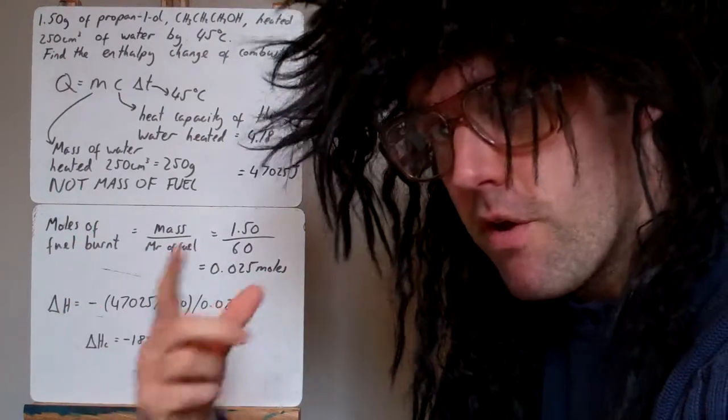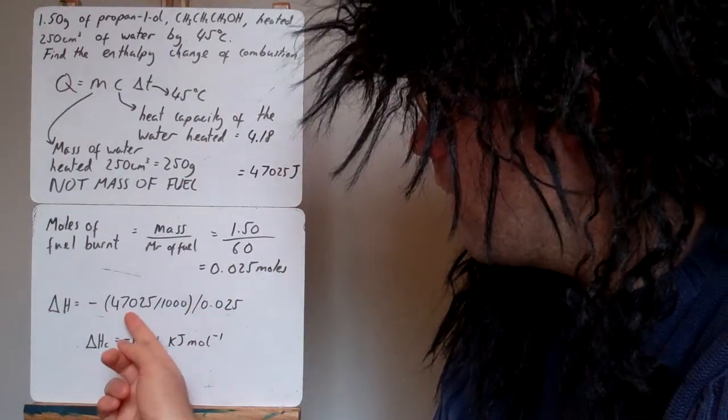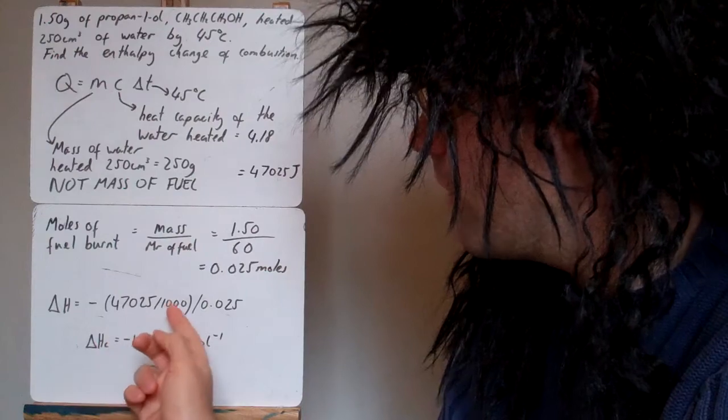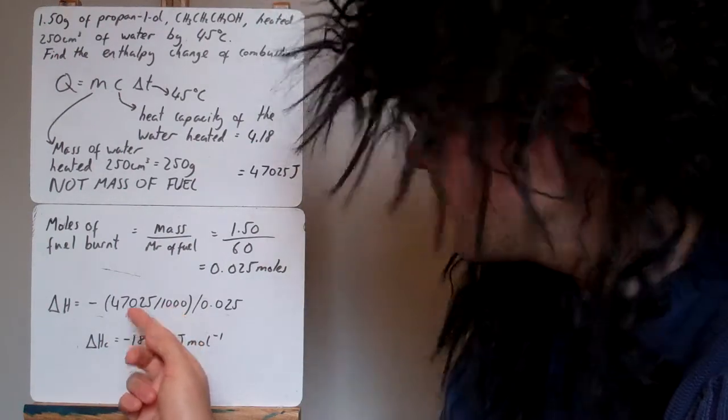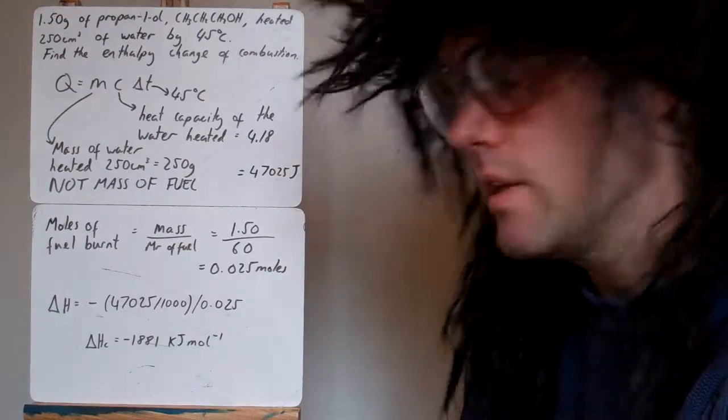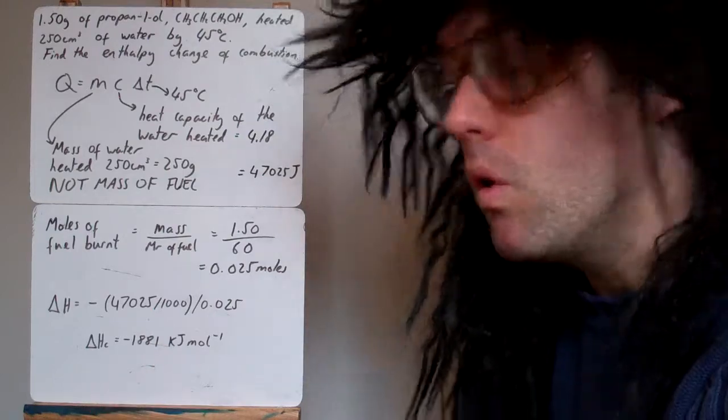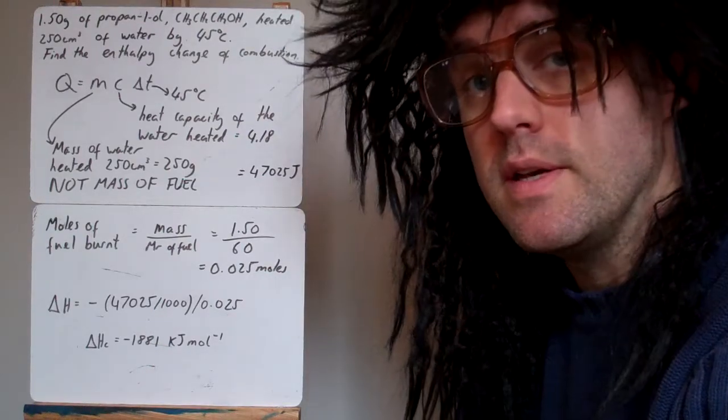So then we take, we do the negative. Remember because it's reversed. It's going to be an exothermic reaction. So it's got to be a negative number. Take Q divided by 1000. So we've got it into kilojoules. And then divide by the number of moles. And that gives us our delta Hc, our enthalpy of combustion. So that would be the energy released when 1 mole of propan-1-ol is heated.